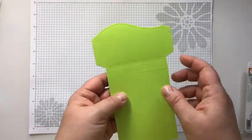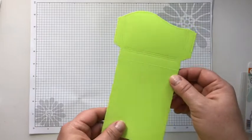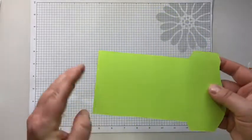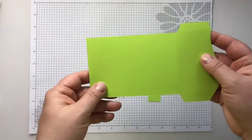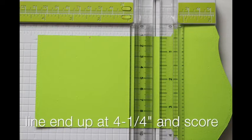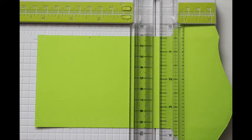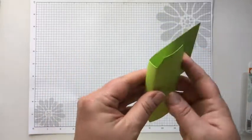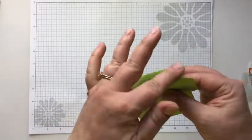Then you're going to put this into your paper cutter where this end lines up with four and a fourth and score it one time. So then when you're folding it, you're creating a wider bottom.